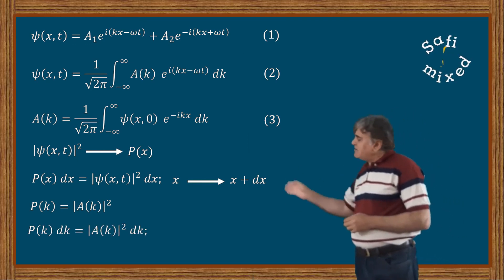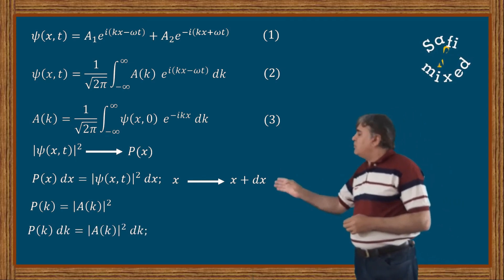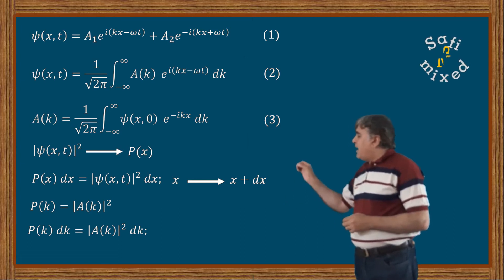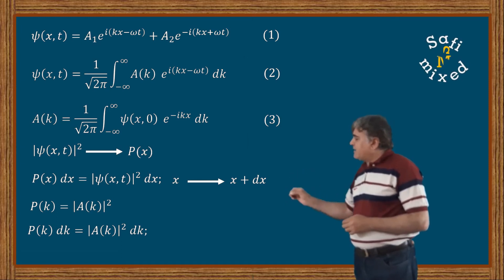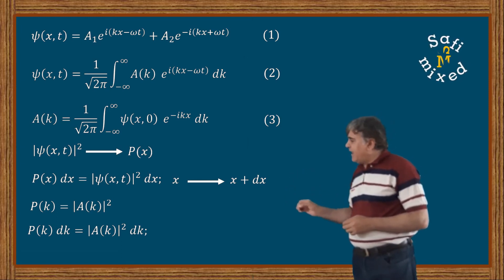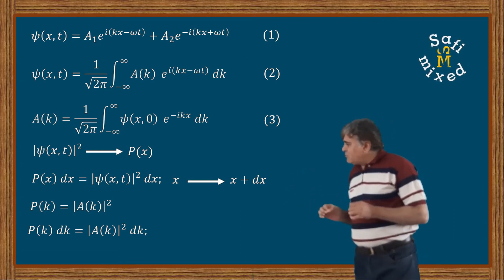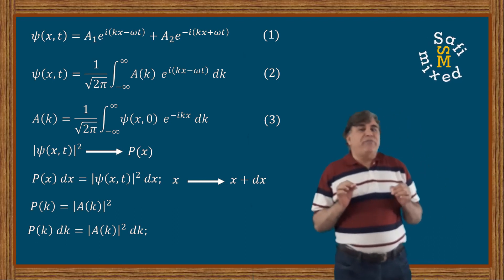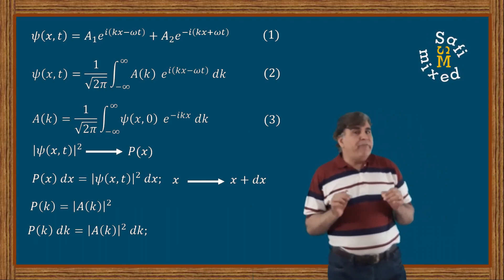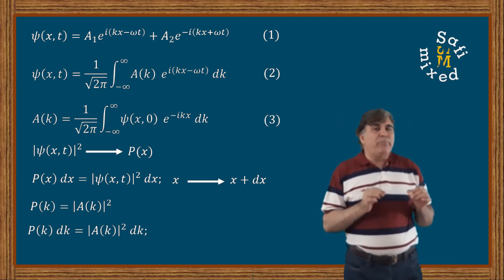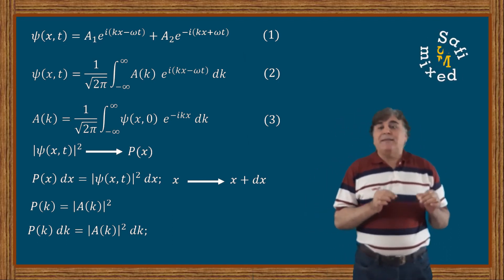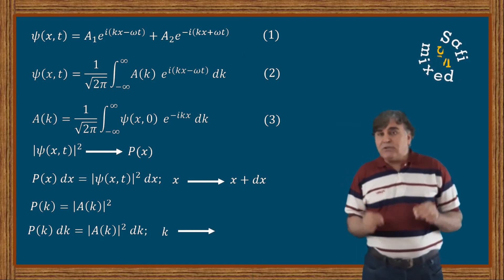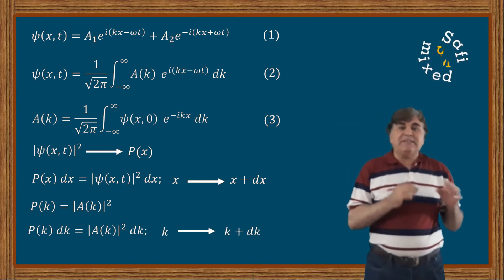And P(k)·dk = |A(k)|²·dk gives the probability of measuring a wave vector or momentum in the range from k to k+dk.